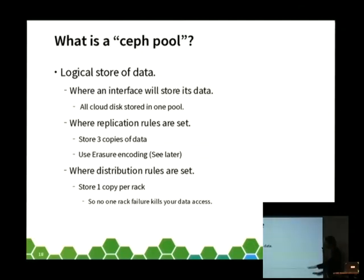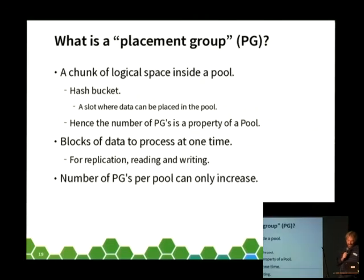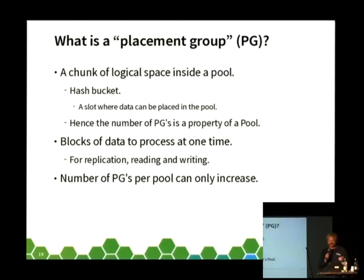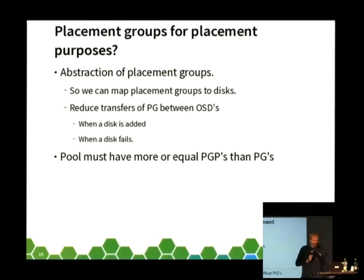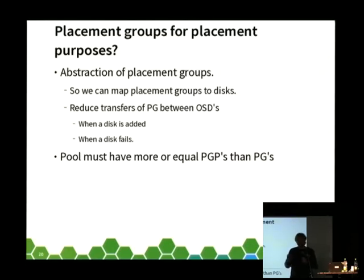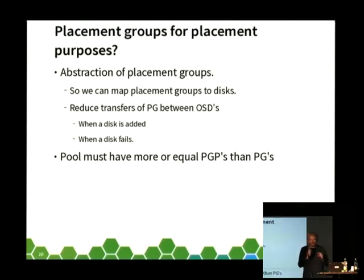There's also a concept called erasure encoding that I'll come to later. One thing you should be warned about is placement groups — you can't shrink the number of buckets in a hash without recalculating everything through the hash. So we do have a usability problem with Ceph: it's not really possible to shrink the number of buckets in the hash algorithm without going through a lot of computation. That is one not-nice bit, but I have to mention it to this audience because they want to know the nasty bits as well.